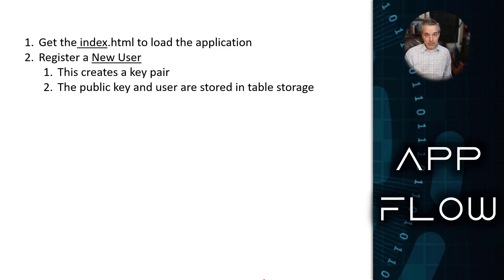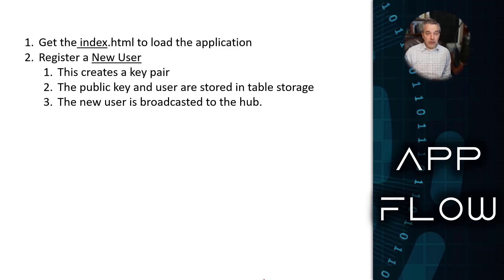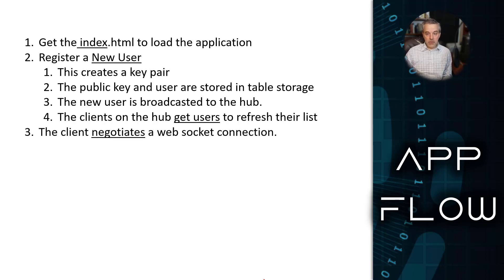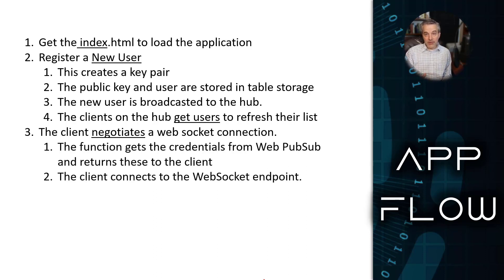The other users will download that public key, but first they need to be informed by the service that there's a new user — that's also what the new user function does. It broadcasts the fact that there's a new user on the hub, and the currently connected users go out and grab a new list of users, downloading the list along with all their public keys. Every other client is now ready to talk to this new user. Next, the client negotiates a WebSocket connection by calling an endpoint called `negotiate`, which talks to WebPubSub to get the credentials — essentially a token — and returns that back to the client. The client then uses that token to create a WebSocket connection, and once it has that connection, it is ready to chat.